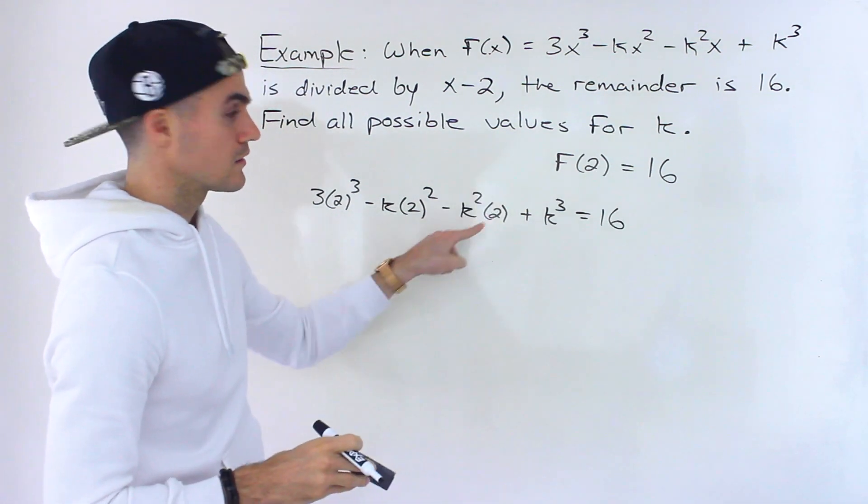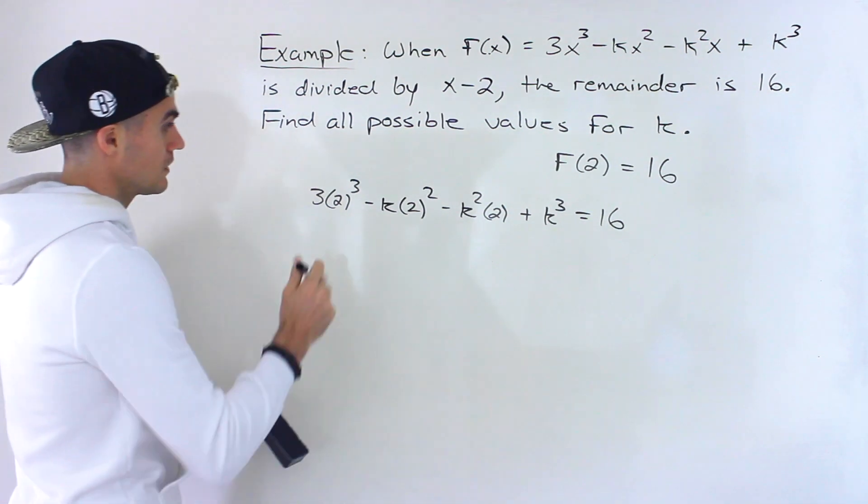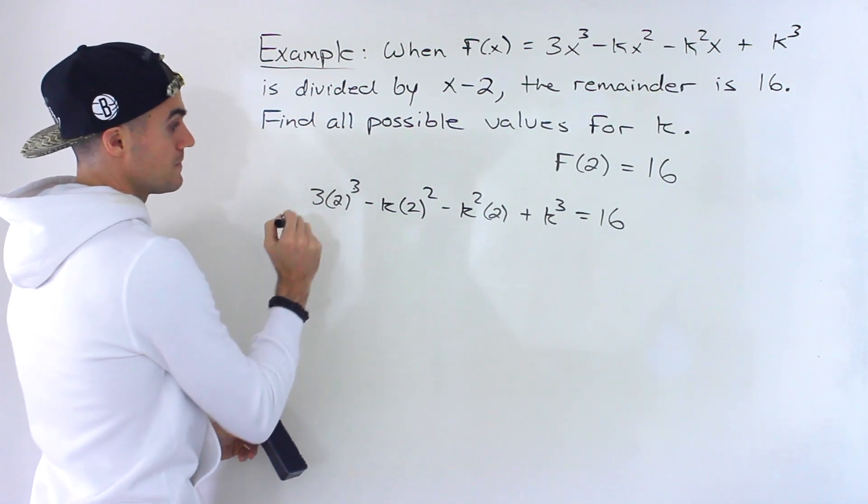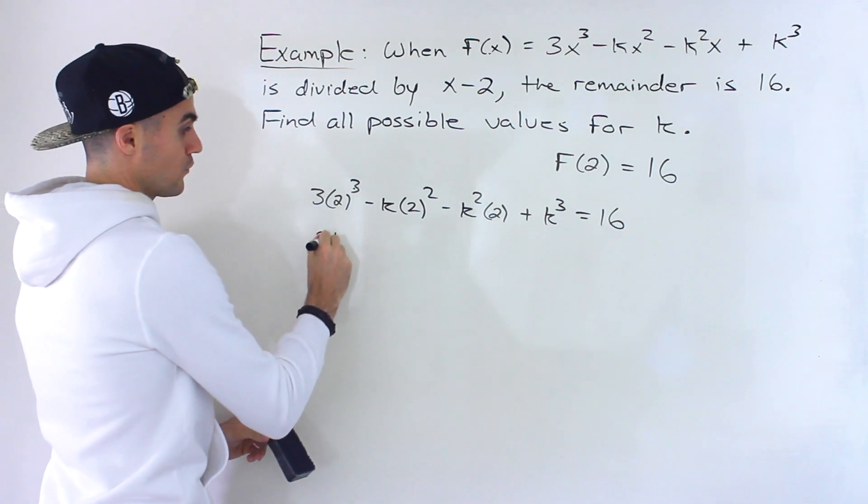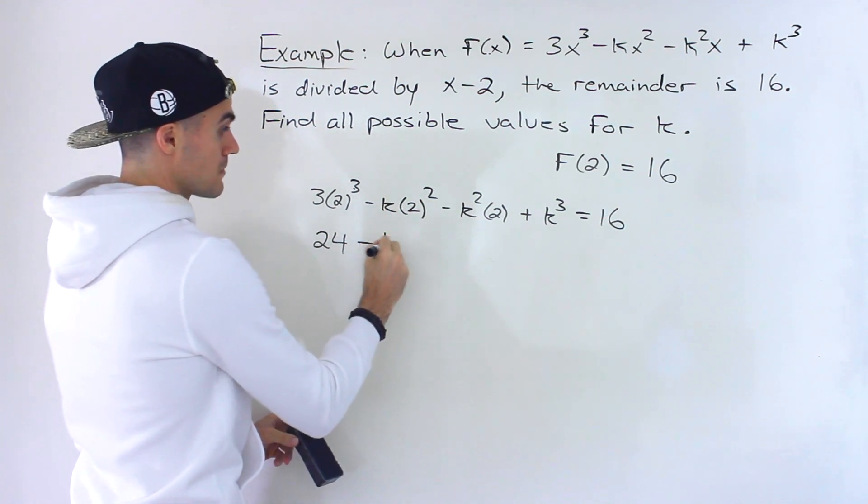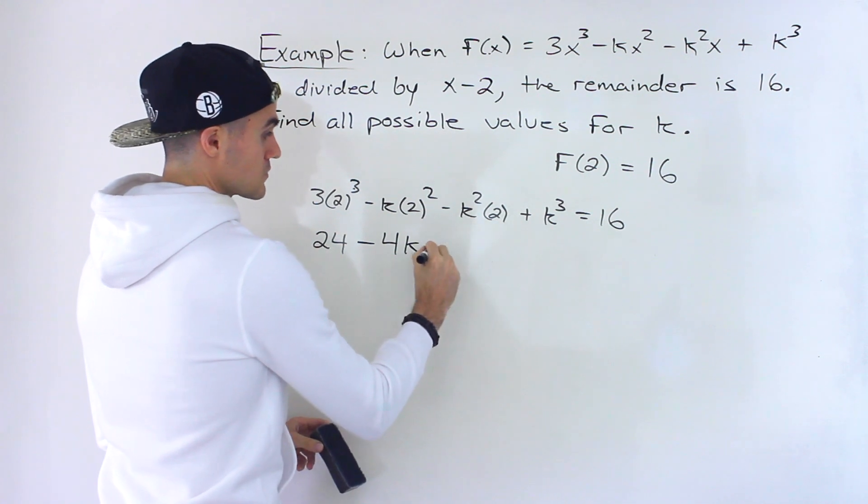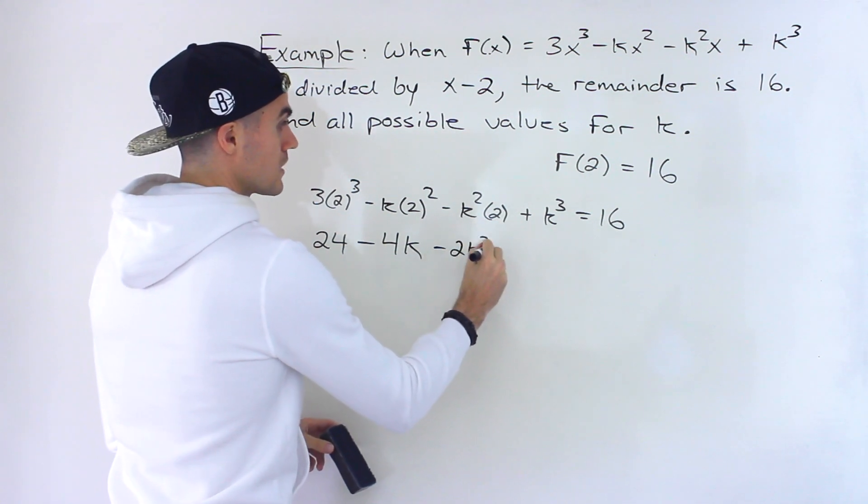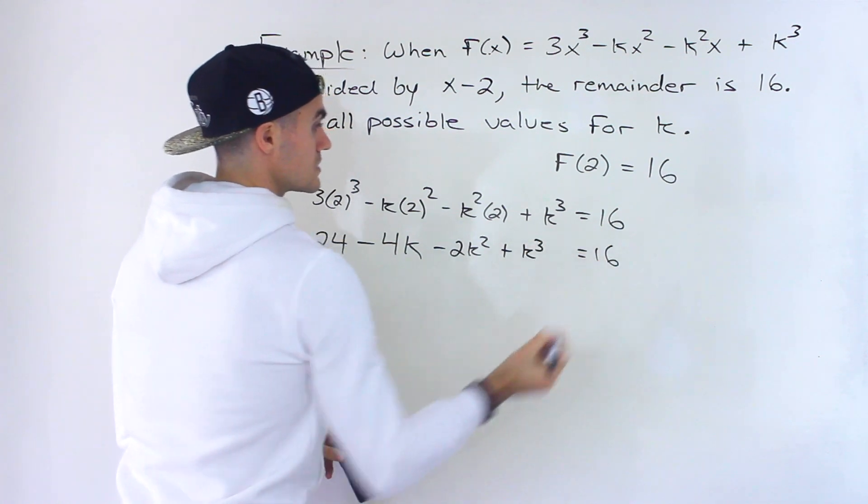Simplifying this: 2³ is 8 times 3, giving us 24. 2² is 4 times negative k, giving us -4k. 2 times negative k² would be -2k², plus k³ equals 16.